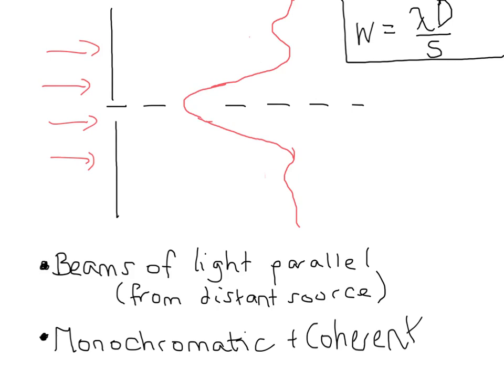The second one we make is that the light is monochromatic and coherent. So what does that mean exactly? Well what it means is that the waves must have the same wavelength and frequency. So we assume all of the light waves that are coming in have the same wavelength and frequency, and that the phase difference between them is going to be constant.